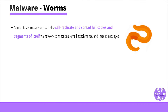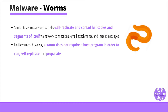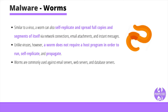Similar to a virus, a worm can also self-replicate and spread full copies and segments of itself via network connections, email attachments, and instant messages. Unlike viruses, however, a worm does not require a host program in order to run, self-replicate, and propagate. Worms are commonly used against email servers, web servers, and database servers. Once infected, worms spread quickly over the internet and computer networks.